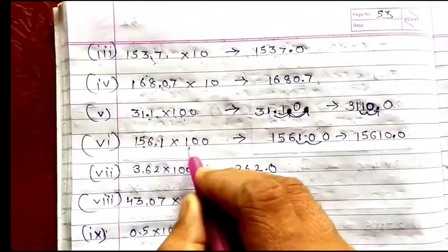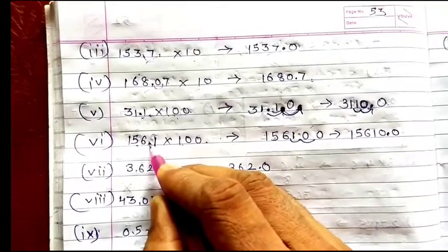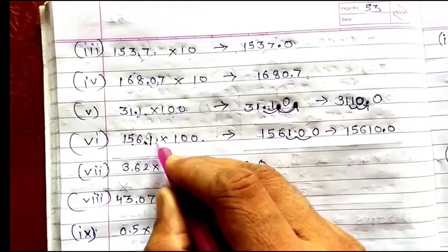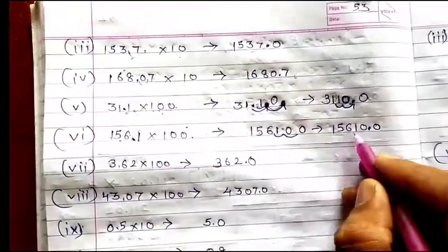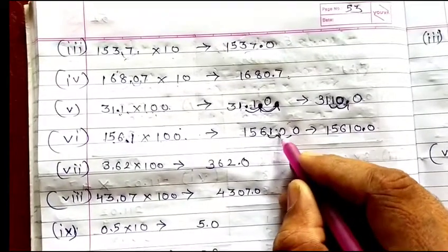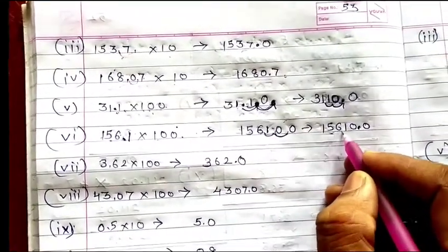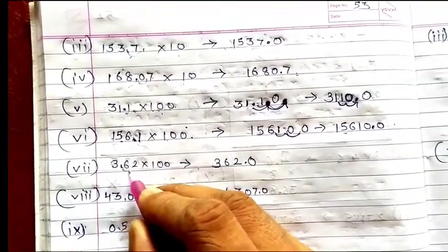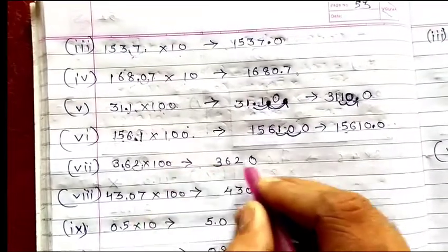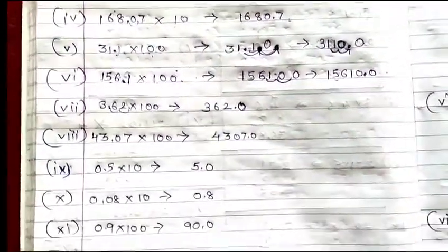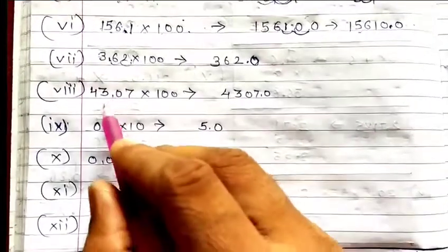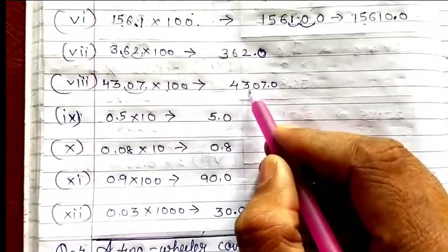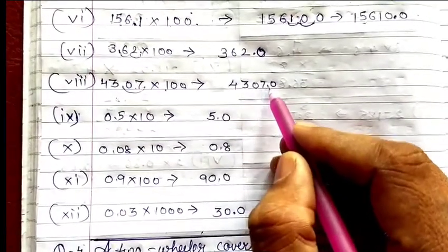Then 156.1 into 100: move the decimal two digits to the right — 156.1 becomes 15610.0. Then 3.62 into 100: move the decimal two places — it becomes 362.0. Then 43.07 into 100: move the decimal two places — it becomes 4307.0.